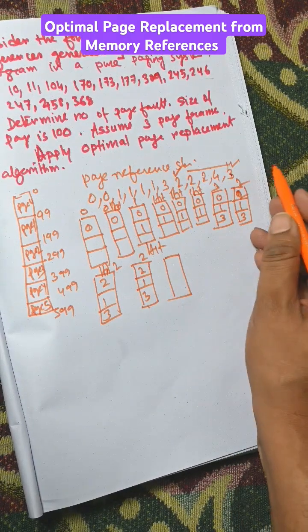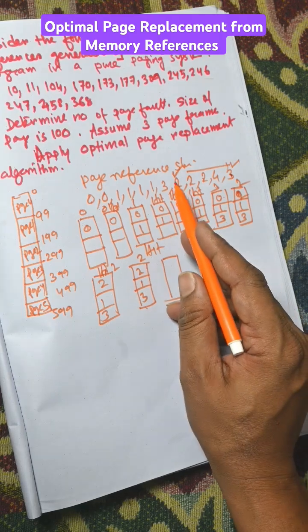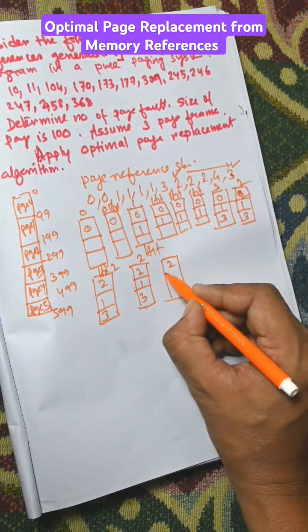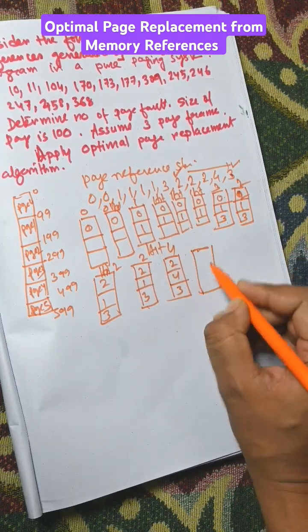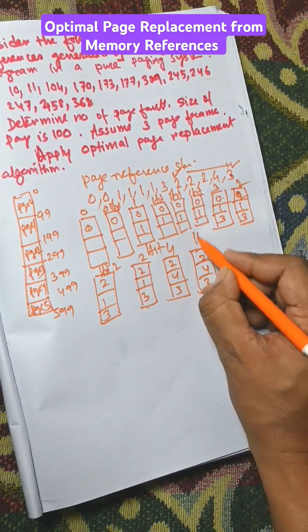So according to first come first out, 1 arrived first, so 1 is replaced by 4. Now we have 2, 4, 3. Next one is a hit.